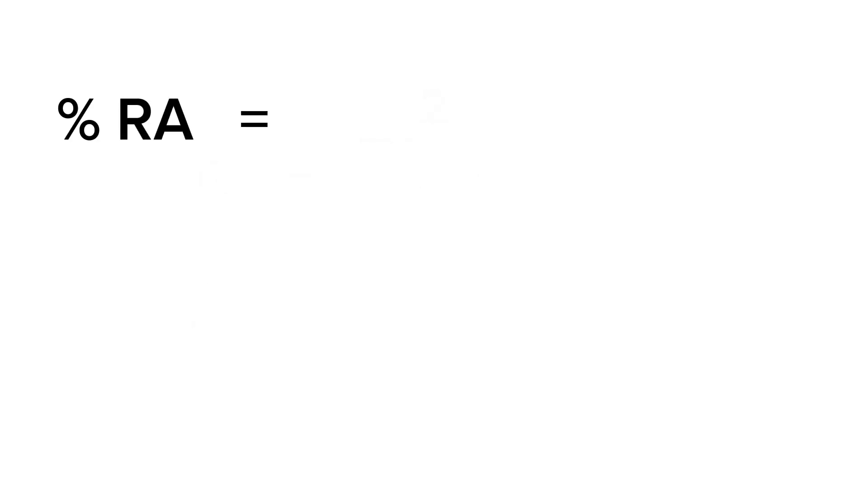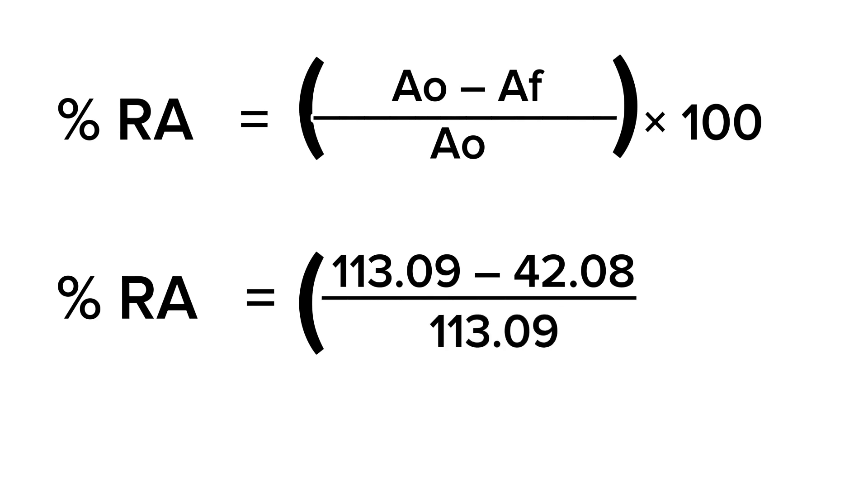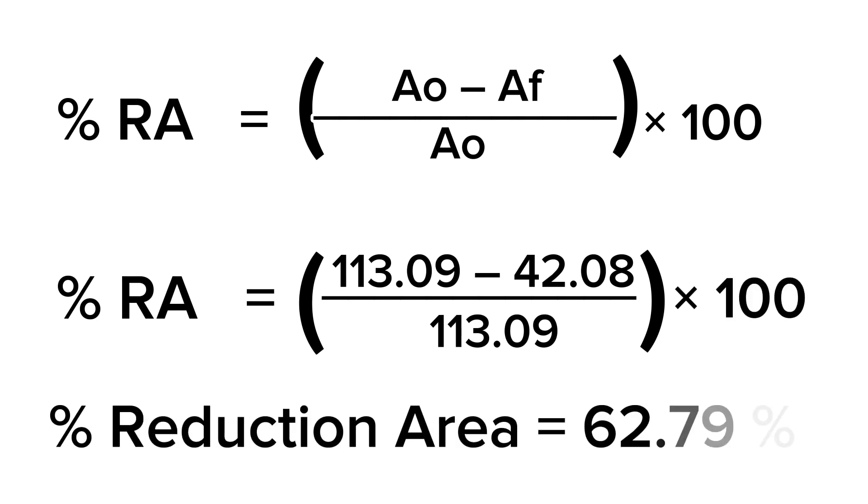Percent reduction area equals (Ao - Af)/Ao times 100. Equals (113.09 - 42.08)/113.09 times 100. Percentage reduction area equals 62.79%.